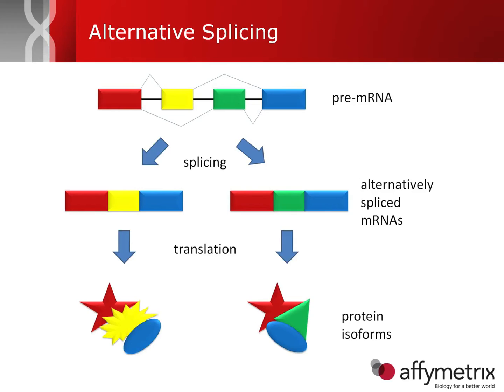You're all familiar with what alternative splicing is, but I'll review it quickly here. In the pre-mRNA state — the native state from reading the DNA — you have red, yellow, green, and blue exons. It's possible to make different protein isoforms by combining those exons in different ways. In the example on the left, we have red, followed by yellow, followed by blue, meaning we've skipped the green one.